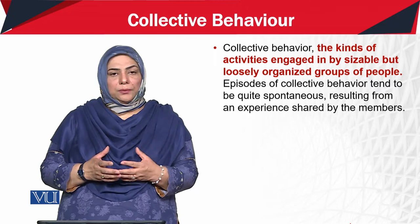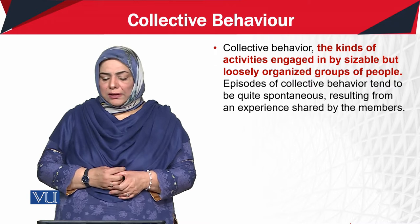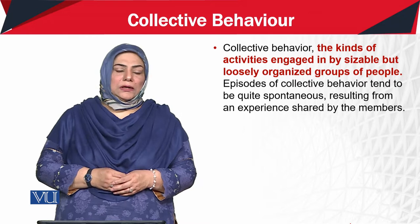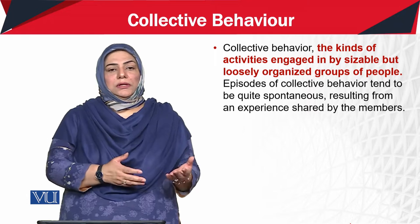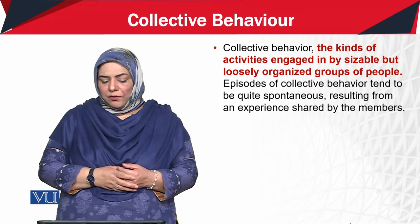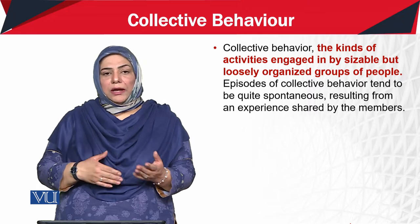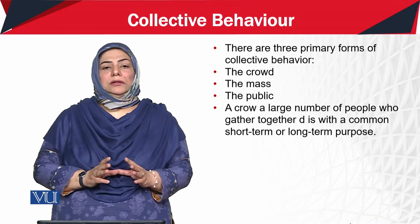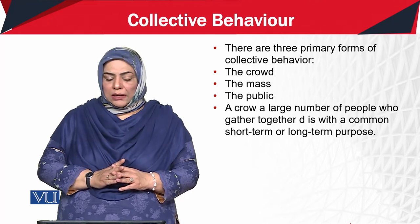Where there are groups involved and some activities involved, we can call it collective behavior. The episodes of collective behavior tend to be quite spontaneous — sometimes behavior is spontaneous, meaning people react to an incident or accident in the same way, resulting from an experience shared by the members. There are mainly three forms of collective behavior: number one, the crowd; number two, the mass; number three, the public.